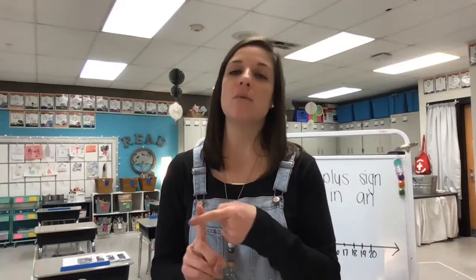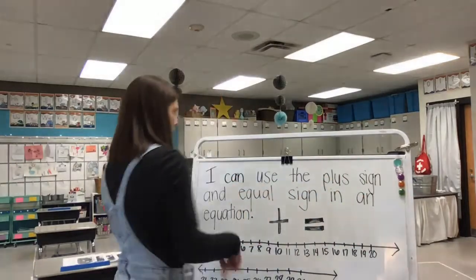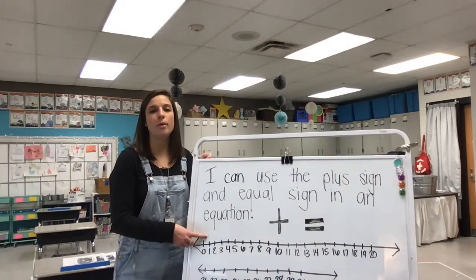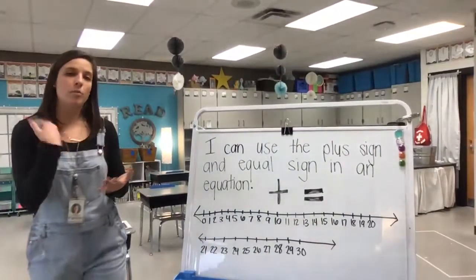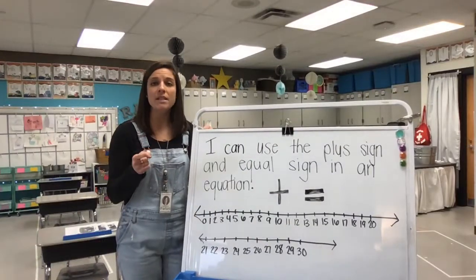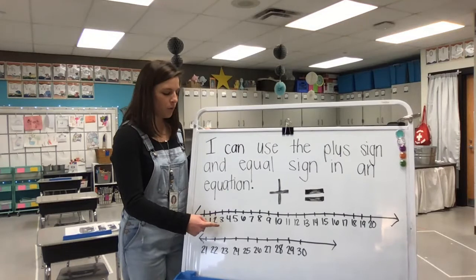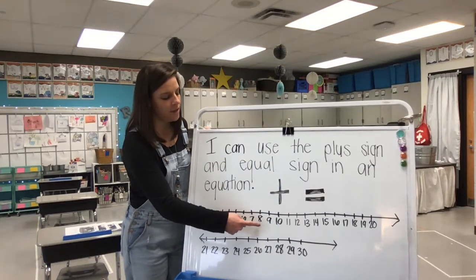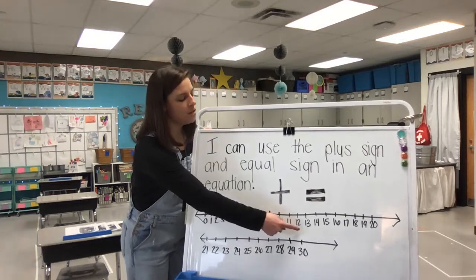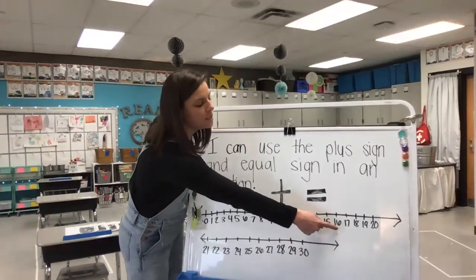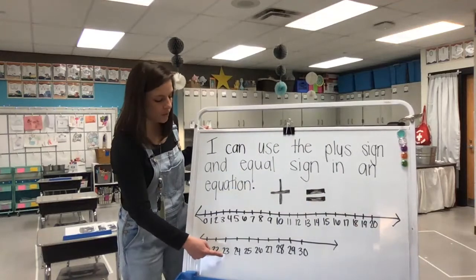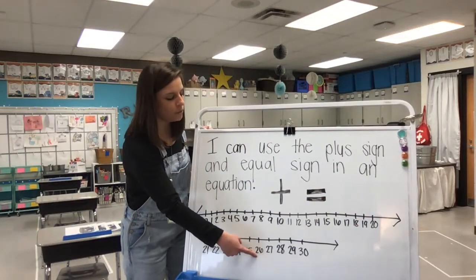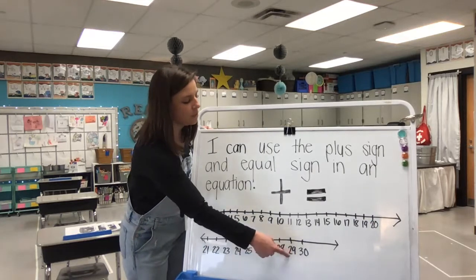Now let's practice counting to 30. This time we're going to count forward and backwards, just like we did the last few days of last week. Starting at the number one, we'll count together. Looking at our number line, we also have zero in front of one, so I put that up there so we can practice remembering that zero comes before one. Ready: 1, 2, 3, 4, 5, 6, 7, 8, 9, 10, 11, 12, 13, 14, 15, 16, 17, 18, 19, 20, 21, 22, 23, 24, 25, 26, 27, 28, 29, 30.